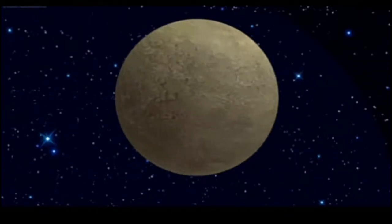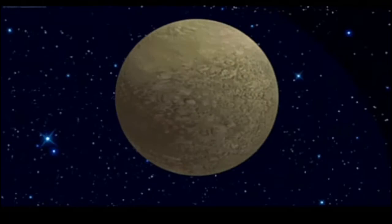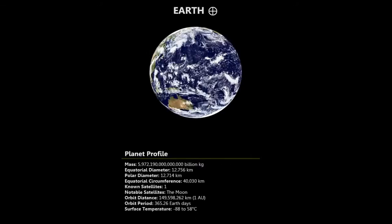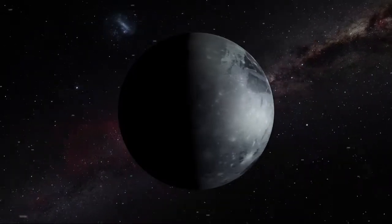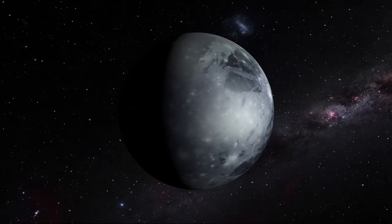Mercury has an average orbital speed of 48 km per second, whereas Earth's average orbital speed is 30 km per second, and Pluto's average orbital speed is only 4.7 km per second.